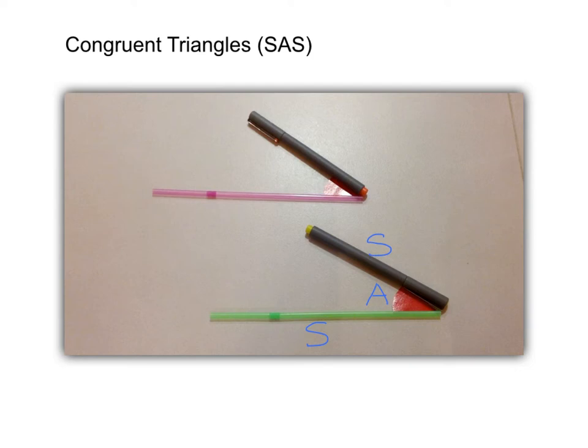Note that we have to follow the exact order: SAS. And of course, we have to complete the two triangles by joining the last side. So now we have two congruent triangles under the condition SAS.